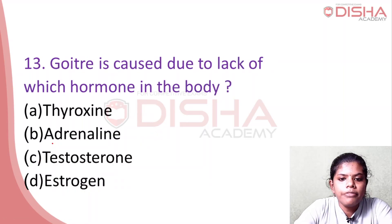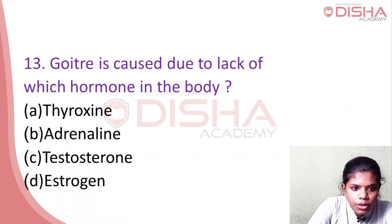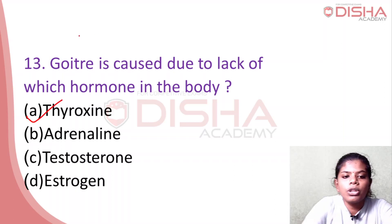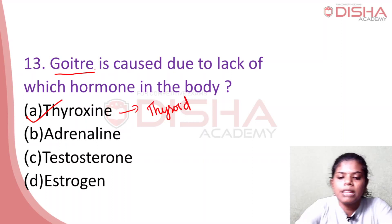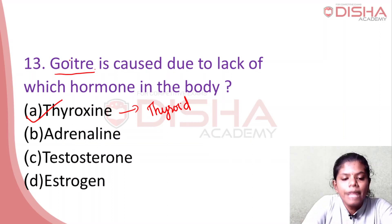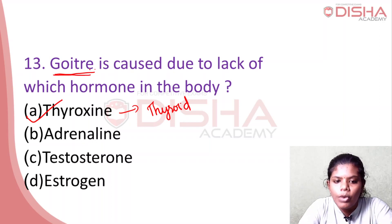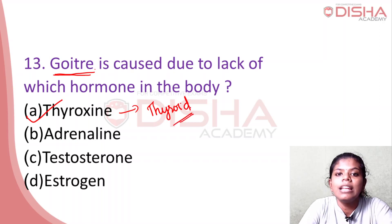Goiter is due to the lack of which hormone in the body? Goiter is caused by thyroxin deficiency. Thyroxin is produced by the thyroid gland.